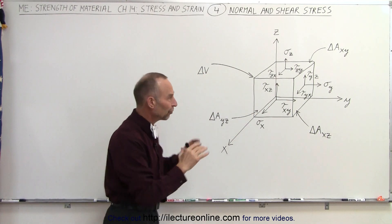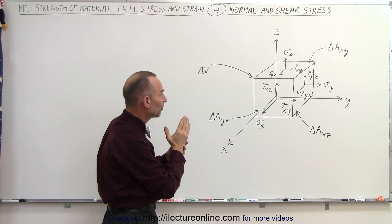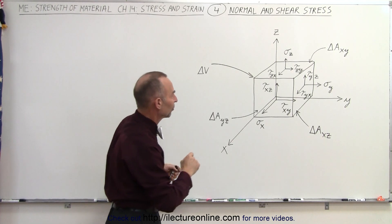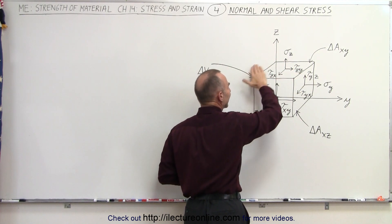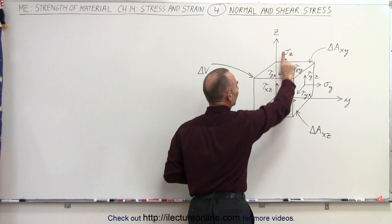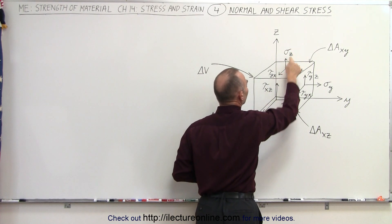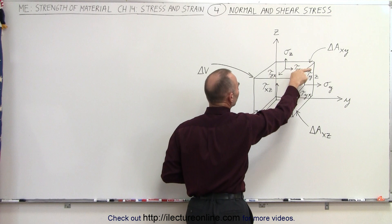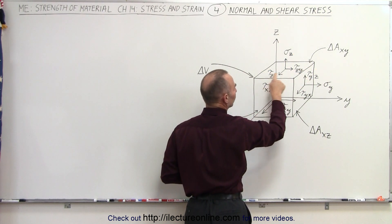And on each surface of that cube, we can identify one normal stress and two shear stresses. For example, on the top surface here, which is therefore in the xy plane, we have a stress that's perpendicular to that surface, which is called the normal stress in the z direction. And then we have the two shear stresses, one in the y direction and one in the x direction. Notice the notation.